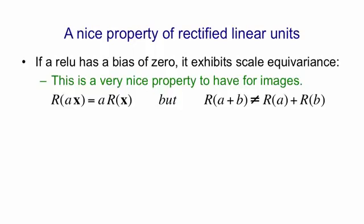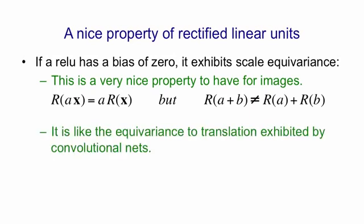Rectified linear units aren't fully linear because if you add together two images, the representation you get is not the sum of the representations of each image separately. This property of scale equivariance is quite similar to the property of translational equivariance that convolutional nets have.